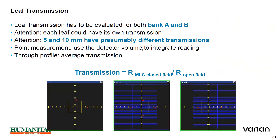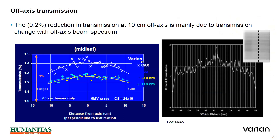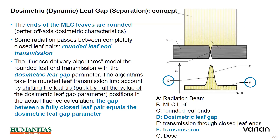For point measurement, use a detector with sufficient volume to average out the reading for transmission. The end of the MLC leaf is rounded, so better off-axis positioning accounts for the material characteristics. Some radiation passes between completely closed rounded leaves at the entrance. The fluence delivery algorithm models the round leaf end transmission with a dosimetric leaf gap.